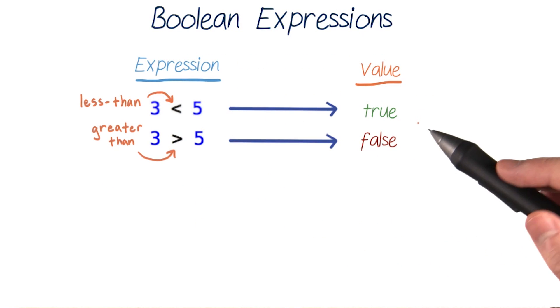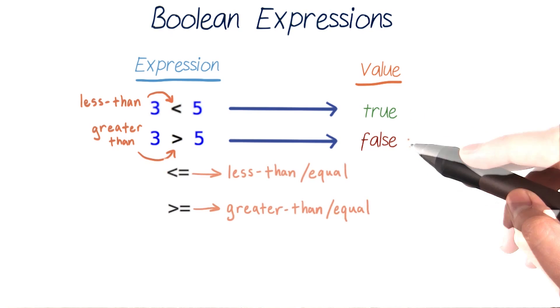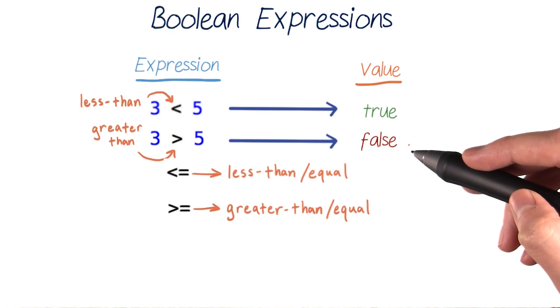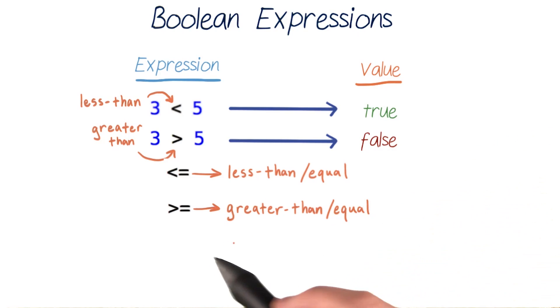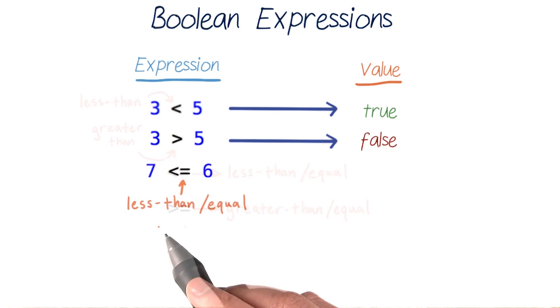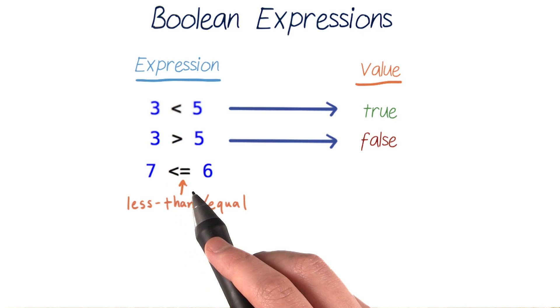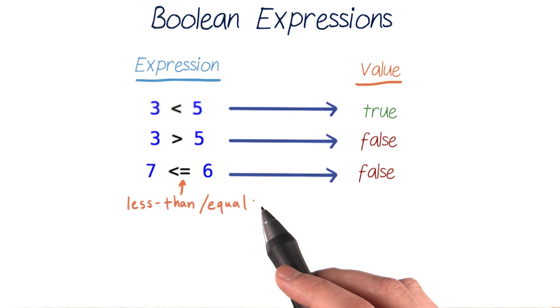There are a number of ways that we can compare numbers or variables that will evaluate to true or false. In addition to these less than and greater than expressions, we can also have less than or equal to and greater than or equal to. Let's use these in examples too. We could test if 7 is less than or equal to 6. And since 7 is greater than 6, this expression is not true. It evaluates to false.